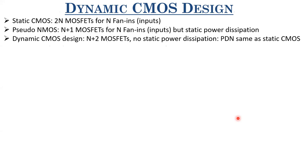In dynamic CMOS design, you reduce the MOSFET count to n+2, compared to 2n MOSFETs in static CMOS. It doesn't offer static power dissipation — though that has to be taken with a pinch of salt, because if subthreshold leakage is considered, there would be some static dissipation. But that would only be leakage-based. Apart from that, there is no connection between VDD and ground rails in the dynamic CMOS design.